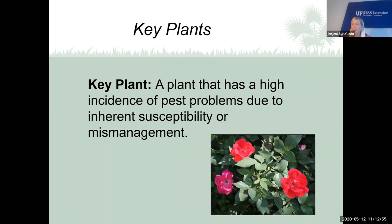Some plants have a high incidence of pest problems due to inherent susceptibility or mismanagement. You can always keep an eye out for that insect and control it as you see it, or just don't plant that plant. For example, roses are susceptible to black spot disease and to chili thrips. If you don't want to fight those problems, maybe the rose bush isn't for you — or choose a cultivar least susceptible to those diseases and insects.